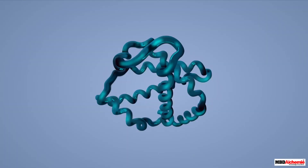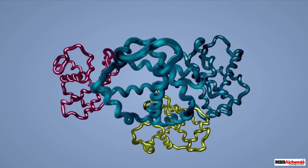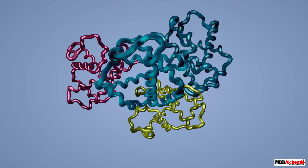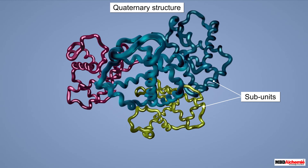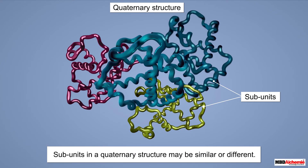Although many proteins consist of a single polypeptide chain, there are some proteins which consist of two or more polypeptide chains. These polypeptide chains are referred to as subunits. The quaternary structure is the special arrangement of these subunits with respect to each other in the protein structure. These subunits in a quaternary structure may be similar or different.